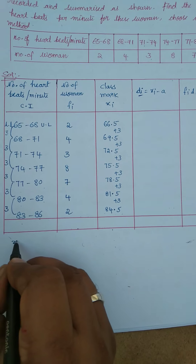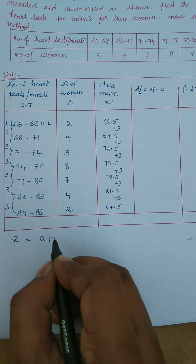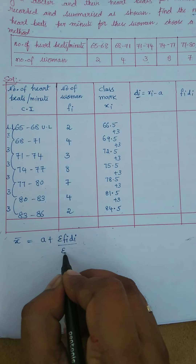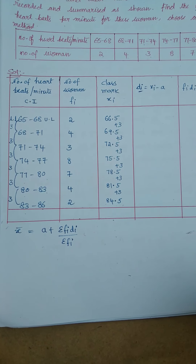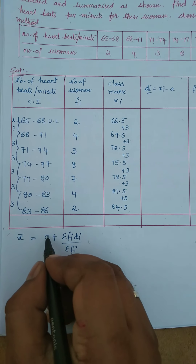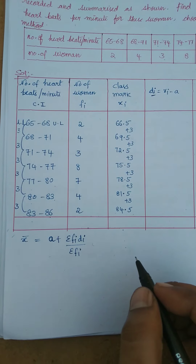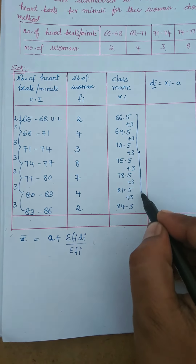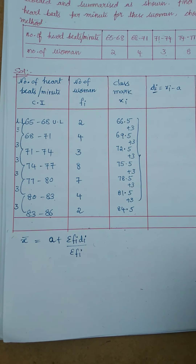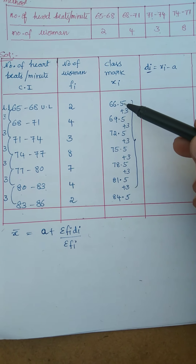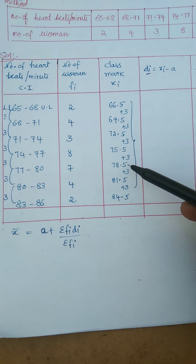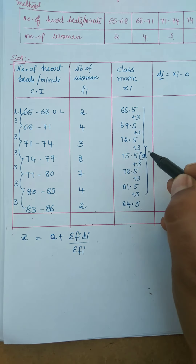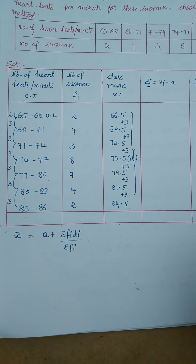There are 7 class marks: 66.5, 69.5, 72.5, 75.5, 78.5, 81.5, 84.5. Since there are 7, the middle value is the 4th one, which is 75.5. So our assumed mean a = 75.5. The formula for di is: di = xi − a.